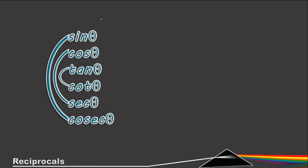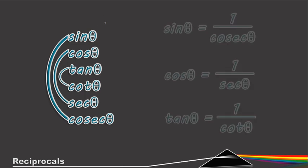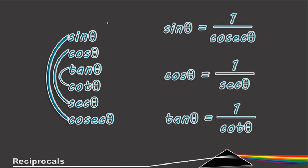So the identities we want to know is the following. The reciprocal, so sin θ is equal to 1 over cosec θ. Same with cos and same with tan. So this you need to know once again off by heart.